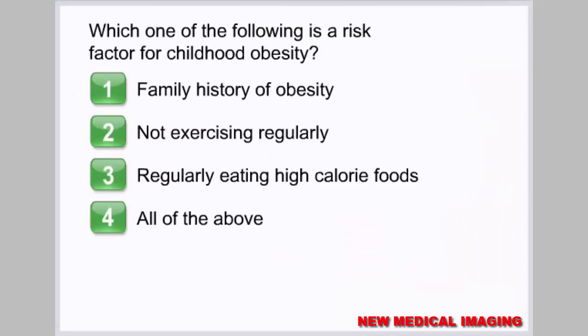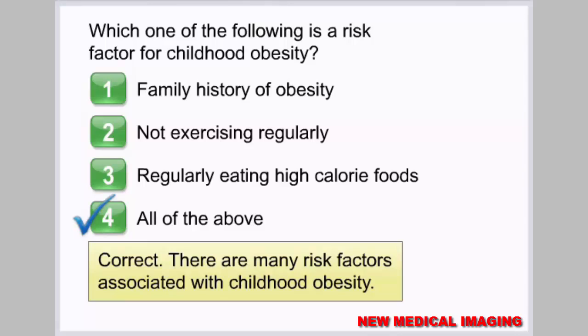Which one of the following is a risk factor for childhood obesity? 1. Family history of obesity. 2. Not exercising regularly. 3. Regularly eating high-calorie foods. 4. All of the above. Correct. There are many risk factors associated with childhood obesity.